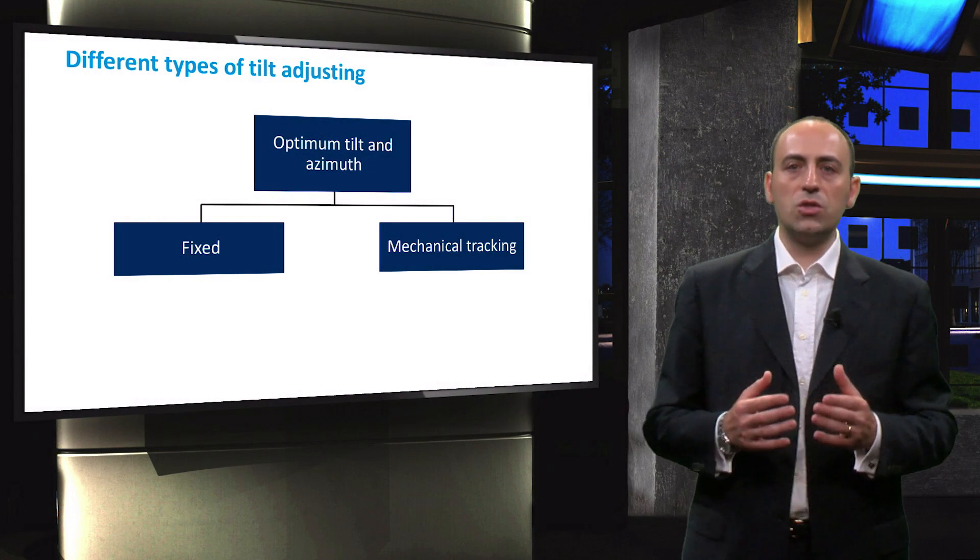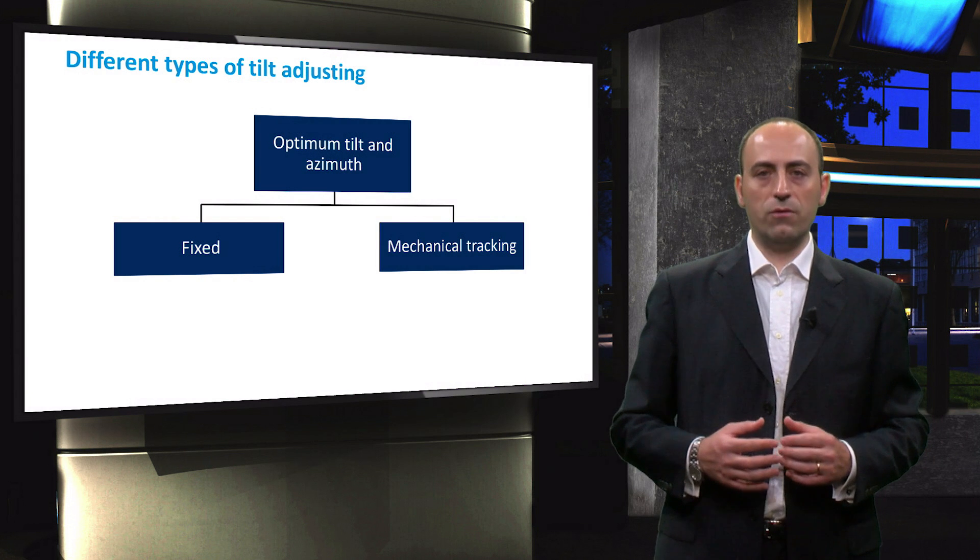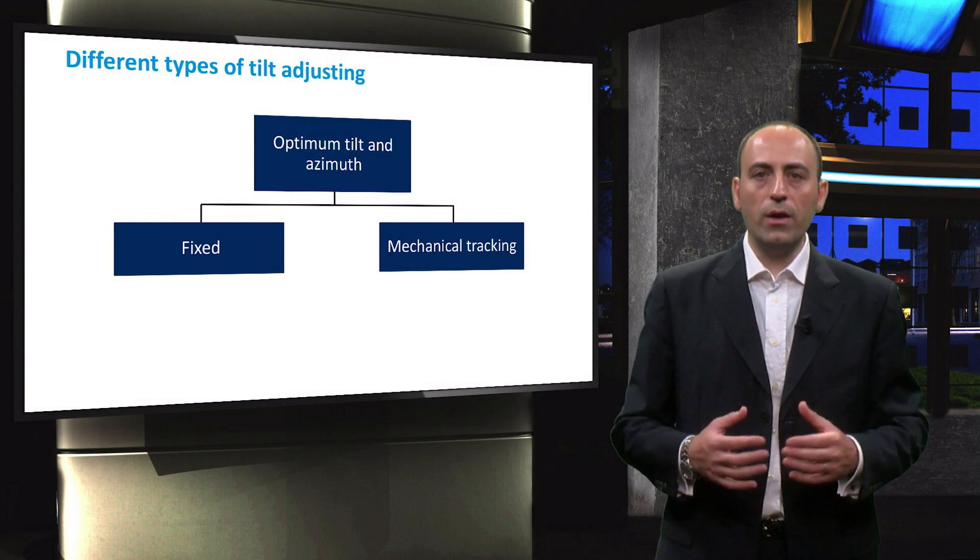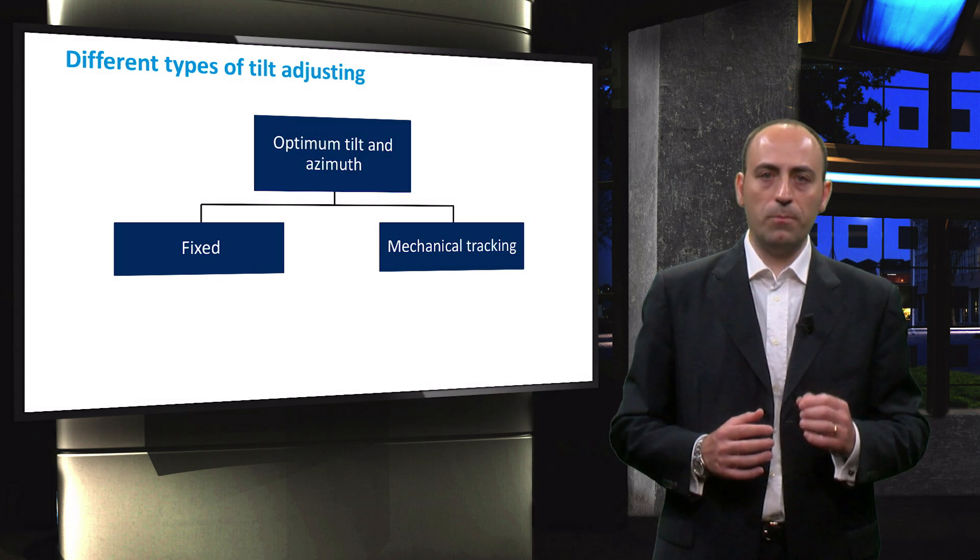However, the most common way to find the best combination of tilt and azimuth is to simulate the performance of the module. Before going into the simulation, we have to distinguish between two possible configurations to mount PV panels.